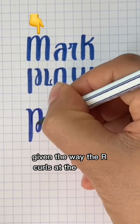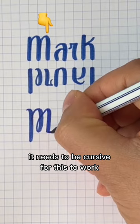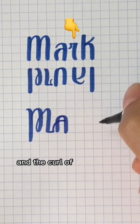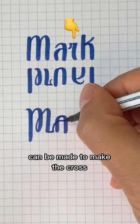Given the way the R curls at the bottom, it needs to be cursive for this to work. You'll notice that this A works better as a capital A to make the U, and the curl of the cursive R can be made to make the cross.